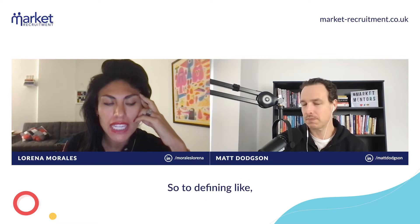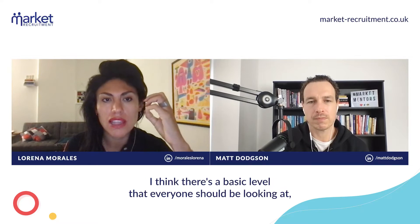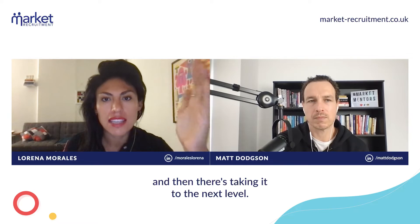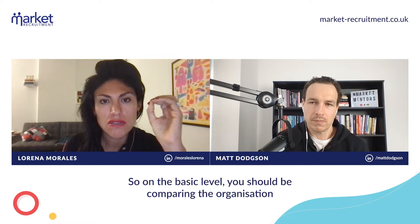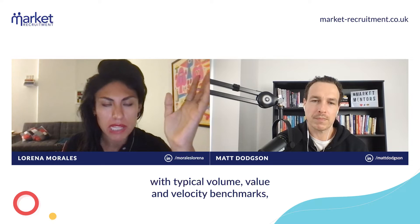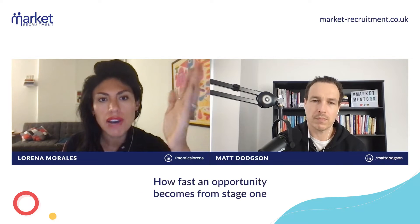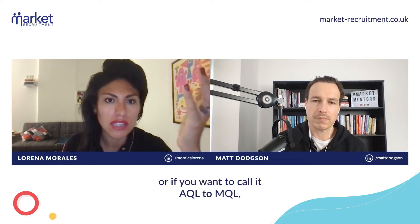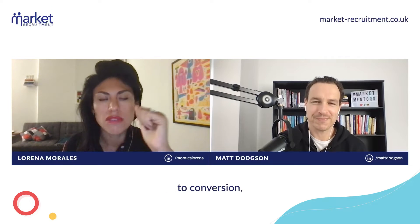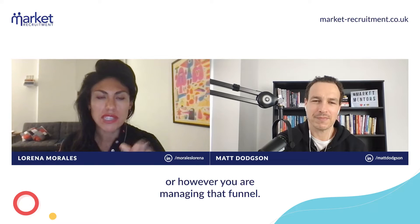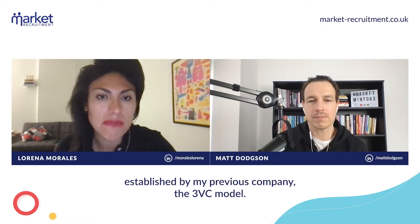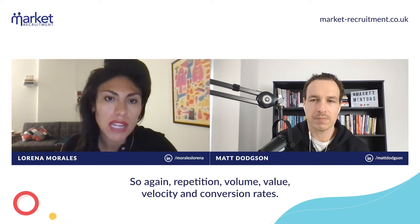So defining how you measure success of revenue operations — I think there's a basic level that everyone should be looking at, and then there's taking it to the next level. On the basic level, you should be comparing the organization with typical volume, value, and velocity benchmarks, and therefore conversion rates. How fast an opportunity moves from stage one to stage two to stage three, or AQL to MQL, MQL to SQL, to SAL, to conversion — however you are managing that funnel. That's the first thing: comparing those three — what we call the 3BC model — volume, value, velocity, and conversion rates.